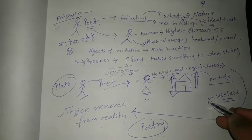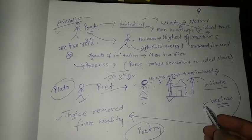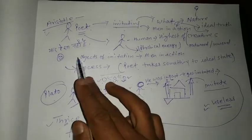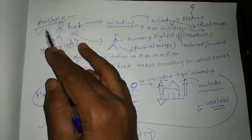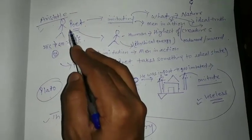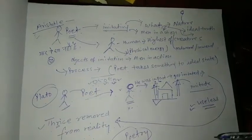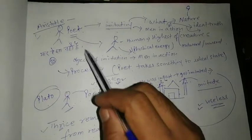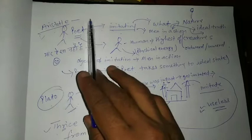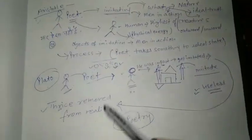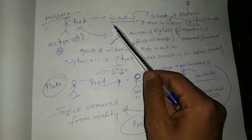So, that's why, Plato calls the poetry useless. Now, comes the turn of Aristotle. Aristotle says, this is not truth about poetry. Poetry is useful for people. Because, what happens? What actually poet imitates? Now, he clarifies or defends poetry with his theory of imitation.